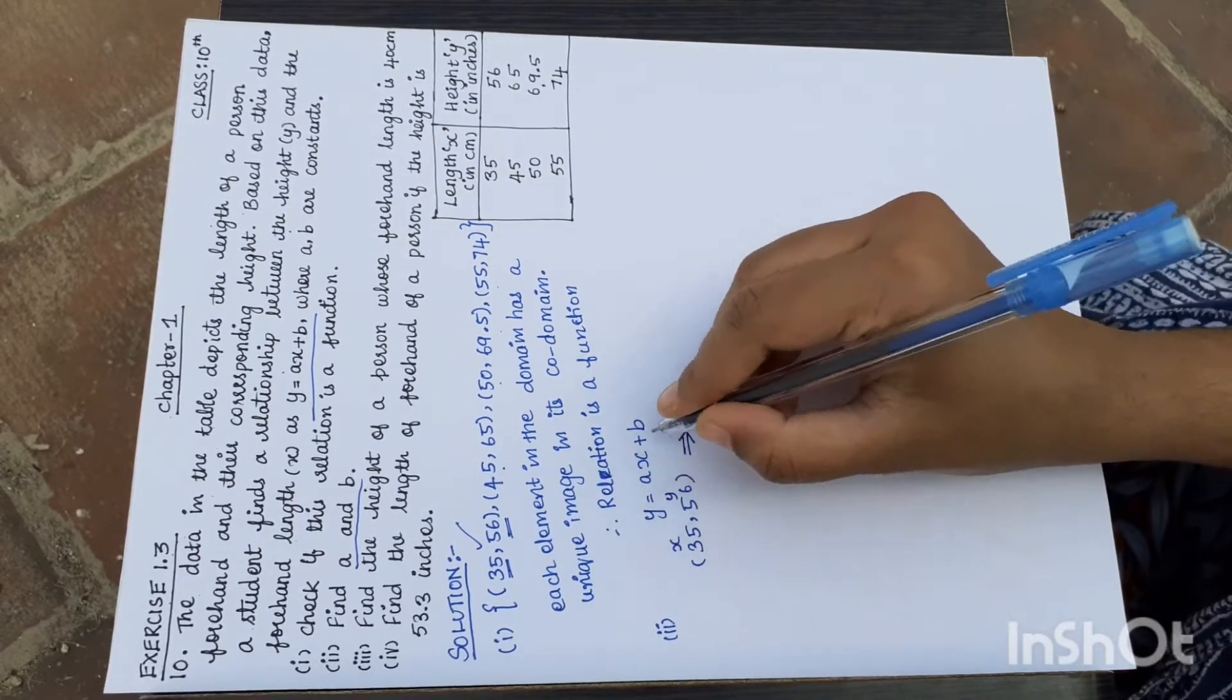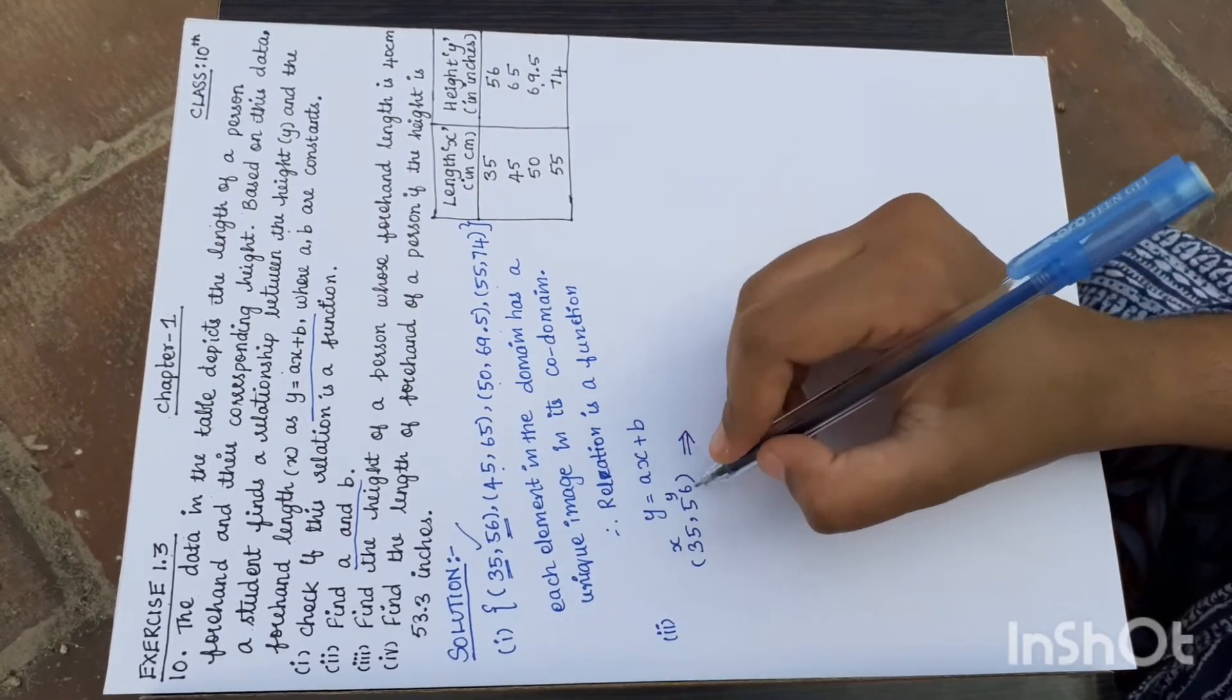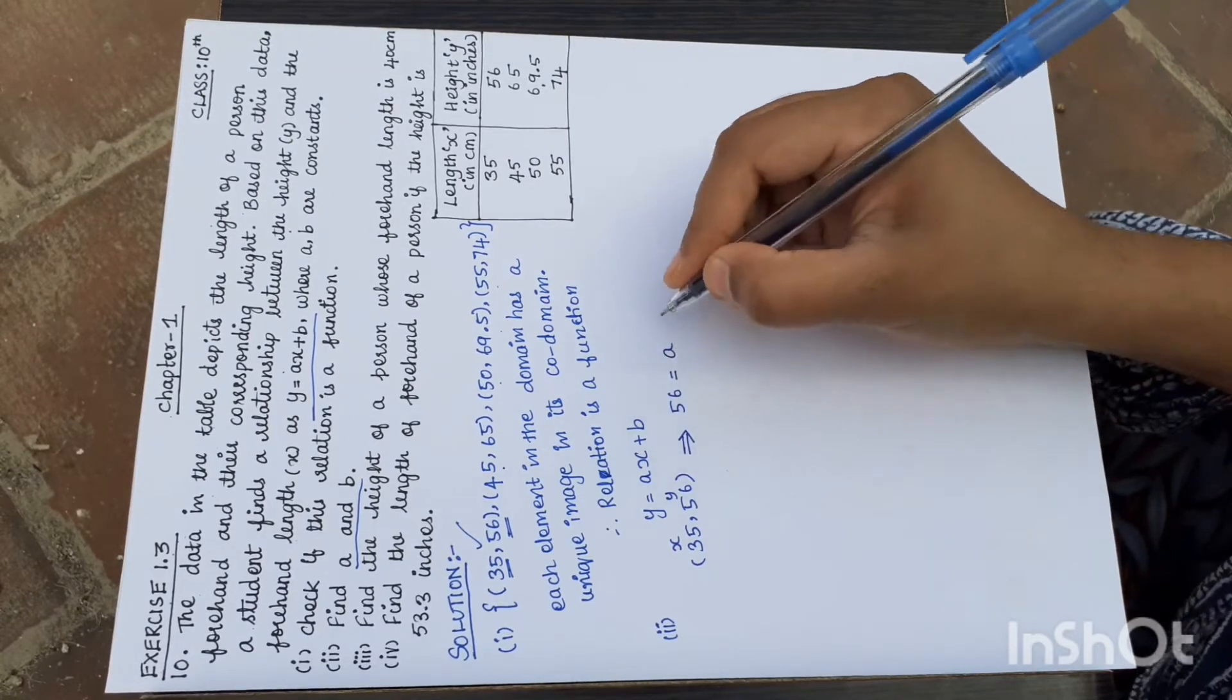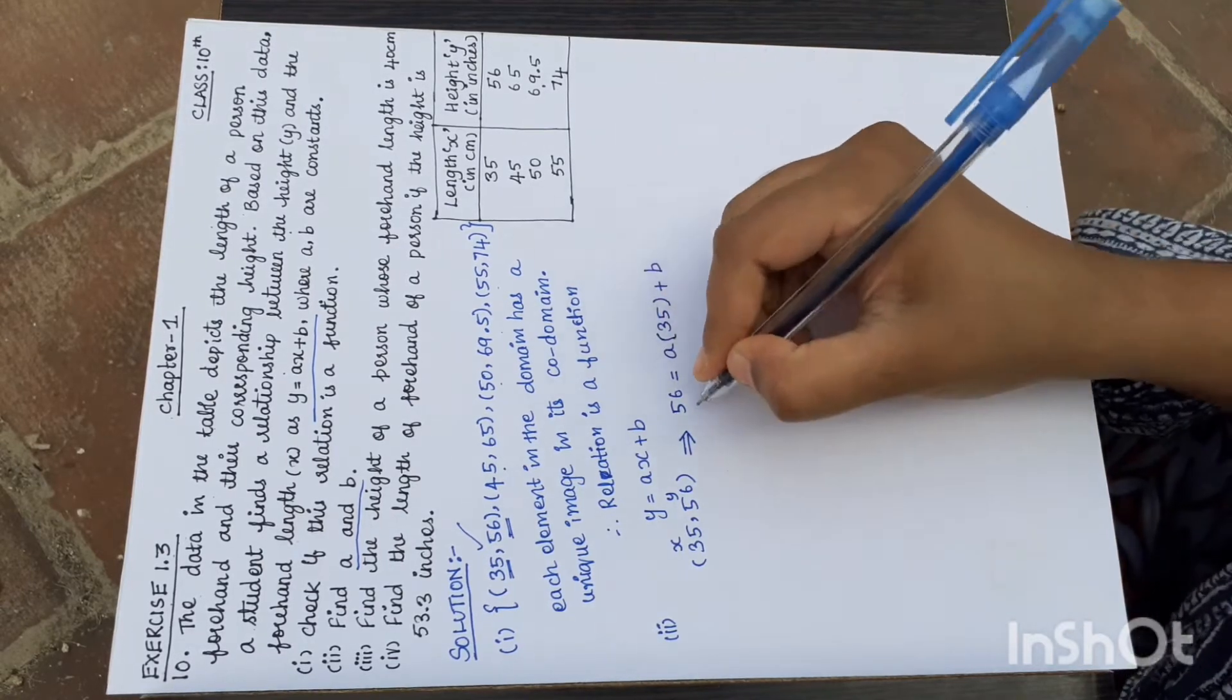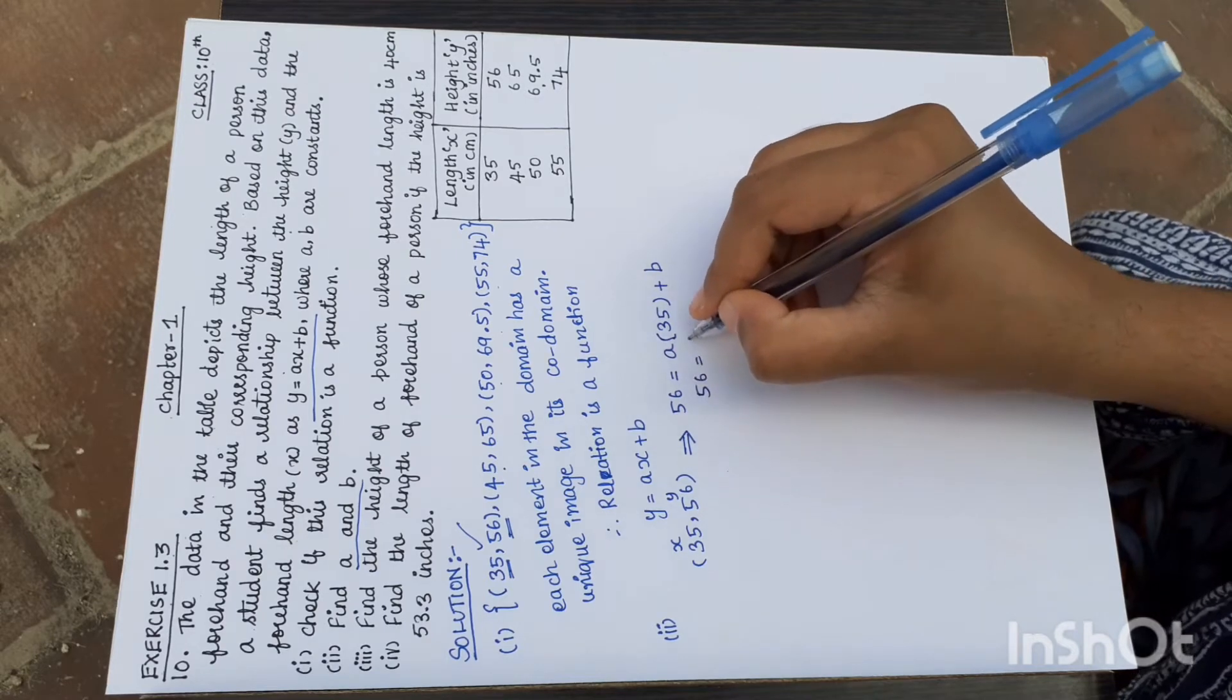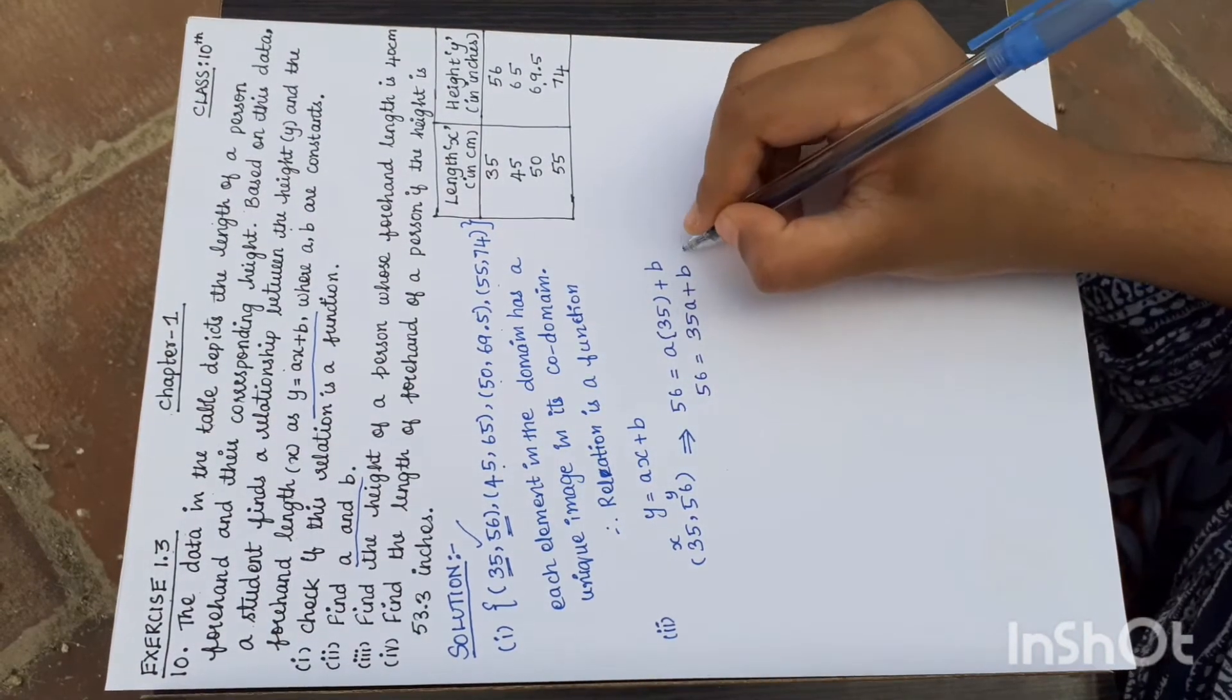Substitute in the relation y equals ax plus b. The y value is 56, so 56 equals a times x, where x is 35 plus b. Simplifying: 56 equals 35a plus b. This is equation 1.